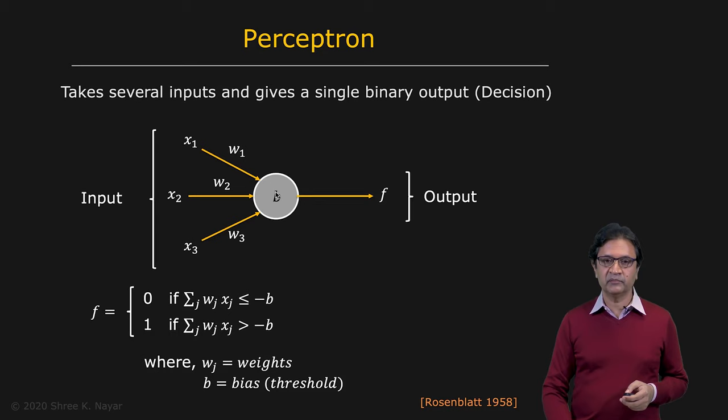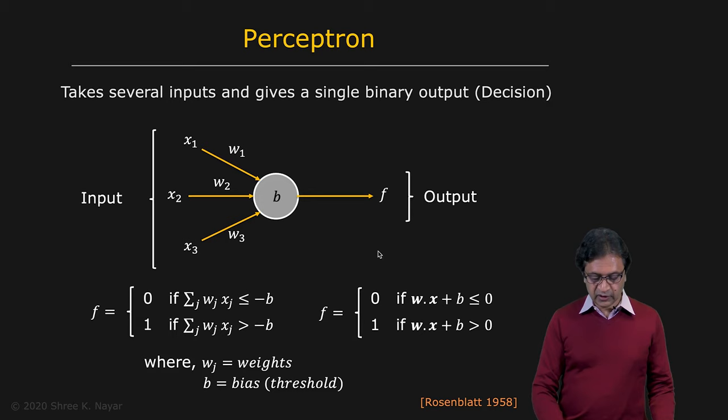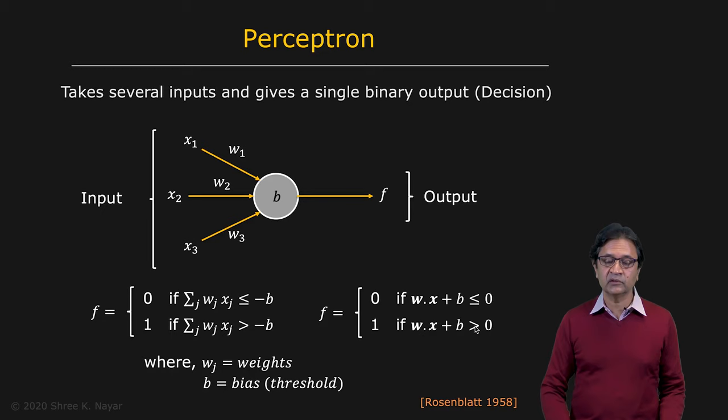Based on that comparison, it puts out an output which is either a zero or one. So we have a perceptron which has weights Wj and the bias, a single bias B. This can be written as follows: you can write all the weights as a vector W, all the inputs as a vector X, and you have your bias, which is B. And you take WX plus B. If that happens to be less or equal to zero, the output of the perceptron is a zero. And if that happens to be greater than zero, the output is a one. That's it. It's a very simple algorithm.